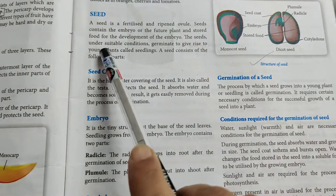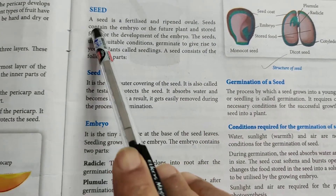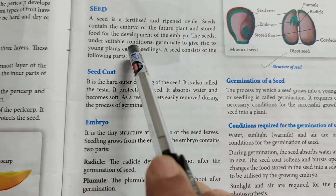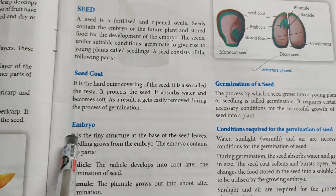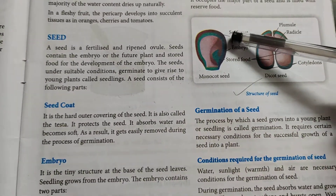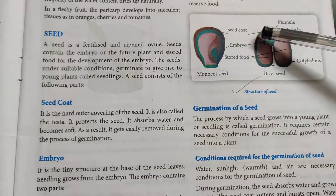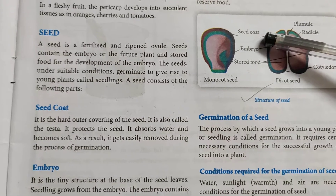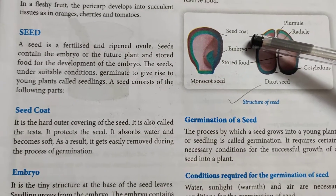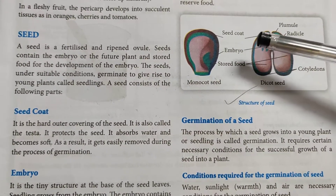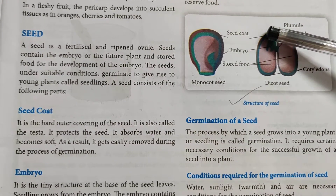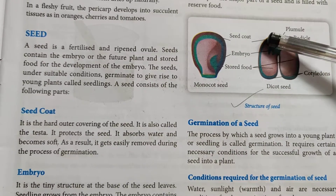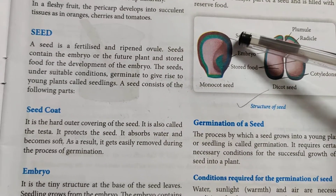Now we come to the seed. A seed is a fertilized and ripened ovule. The seed coat is the hard outer covering of the seed, also called the testa. It protects the seed, absorbs water, and becomes soft. As a result, it gets easily removed during the process of germination.